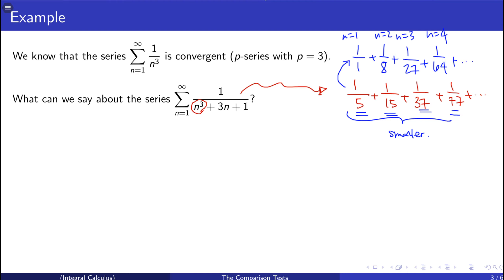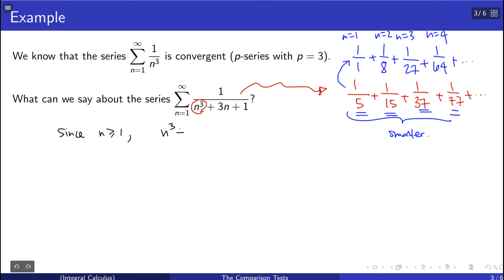We can prove this in general. Since n is larger than or equal to 1, we can immediately say n³ + 3n + 1 is going to be larger than n³.